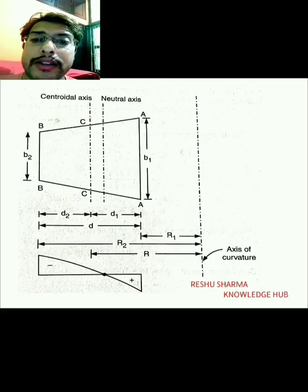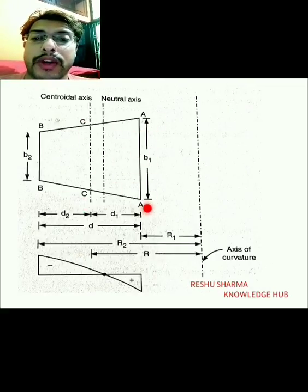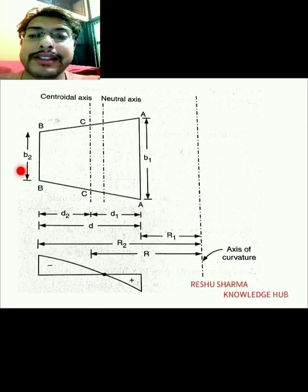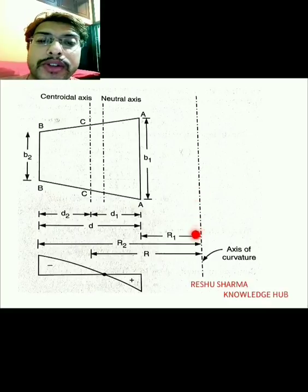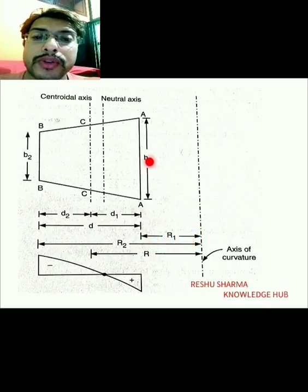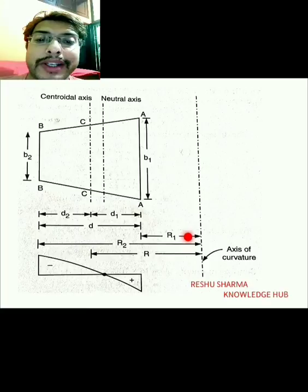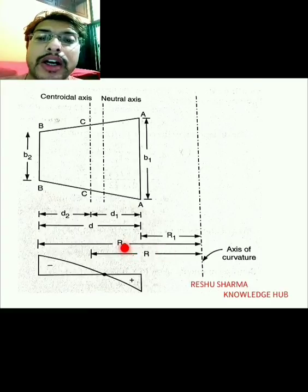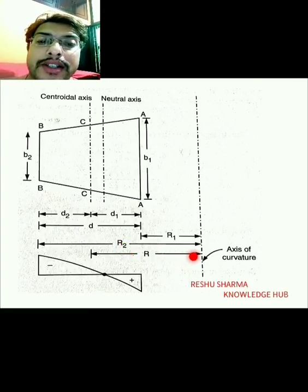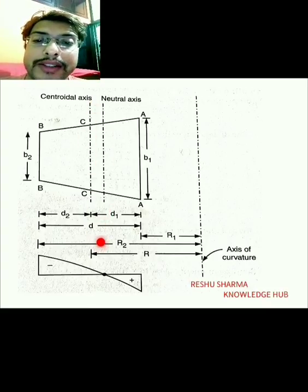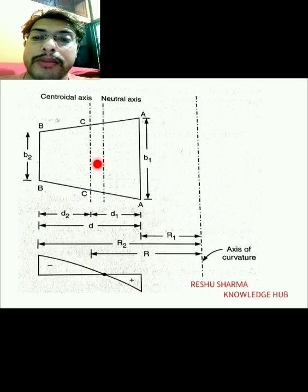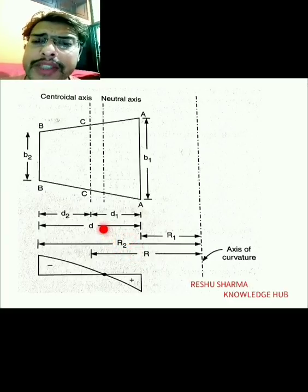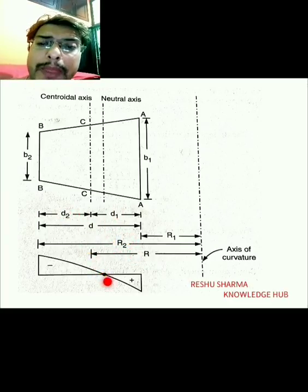The cross-section has sides b1 and b2. The axis of curvature is shown, and the distance of cross-section A-A from it is r1, while the distance of cross-section B-B from it is r2. R is the distance between the axis of curvature and the centroidal axis. The neutral axis is at a distance y-naught from the centroidal axis.